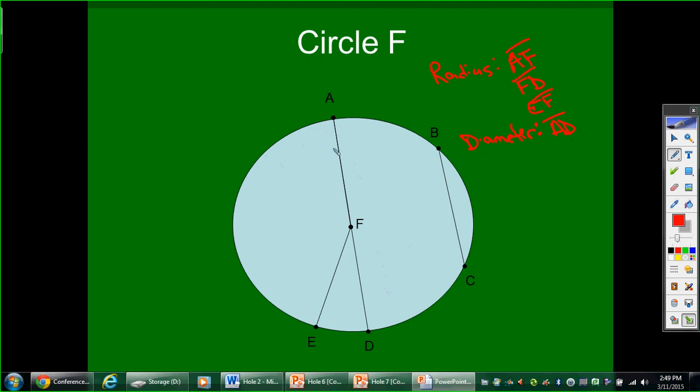A central angle has the vertex as the center point. In this case, I have a couple of central angles. I would have angle AFE. It should be this angle right here. I would also have angle AFD. AFE would be obtuse. Angle AFD would actually be a straight angle. And then I would also have angle AFD right here. That would be an acute angle. So I would have three different central angles.